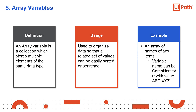An array is a data structure that contains a group of elements of the same data type, such as an integer or string. An array variable enables users to store multiple values of the same data type. Array is a type of collection variable used to store multiple entries. The size of an array is defined when it is created, and it is not dynamic.